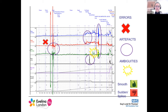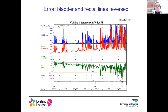Smooth changes in traces are generally physiological, whereas sudden changes and spikes are generally artifact or error. Here's another error: a case where the rectal and the vesicle lines were inadvertently reversed, showing an abnormal trace. It took quite a while for the urodynamicist to recognize this.